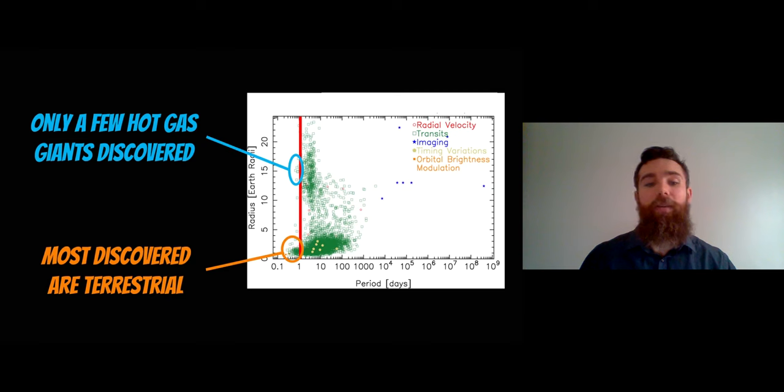Now the interesting thing is that they can be put into kind of two groups really. So the top one that I've circled with a blue circle, these are basically your hot gas giants. So these are large planets, they've got very large radiuses. We're talking kind of Jupiter sort of size, Neptune size and they have orbital periods of less than one day. So they're hot because they're close to their star and they're very large.